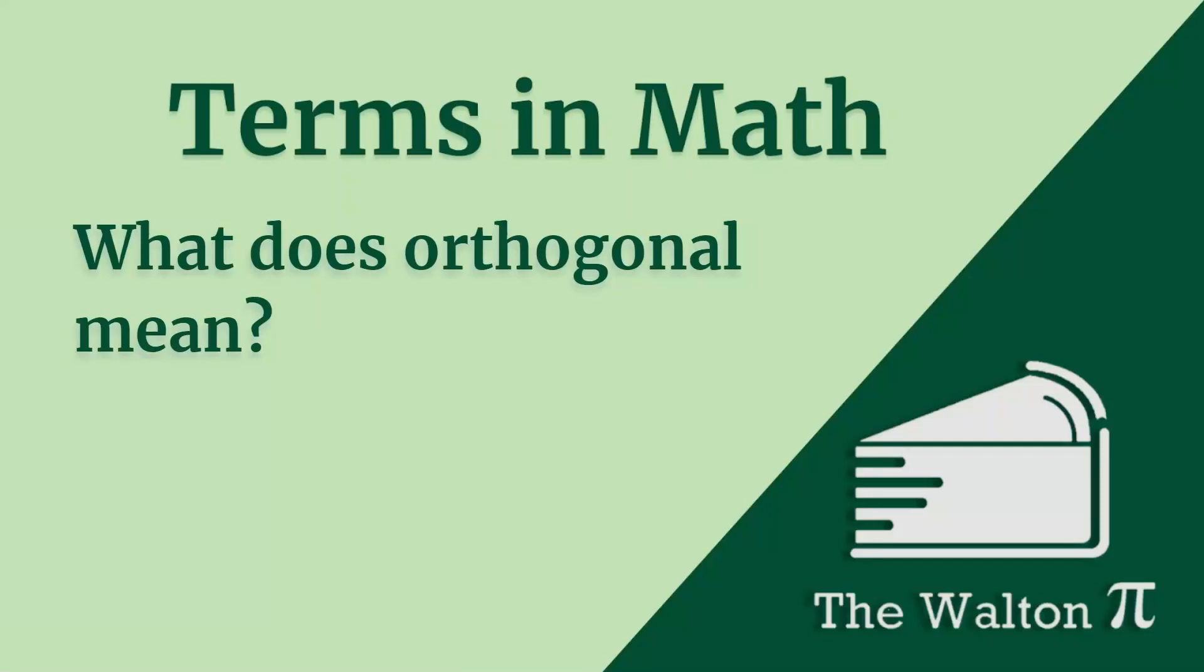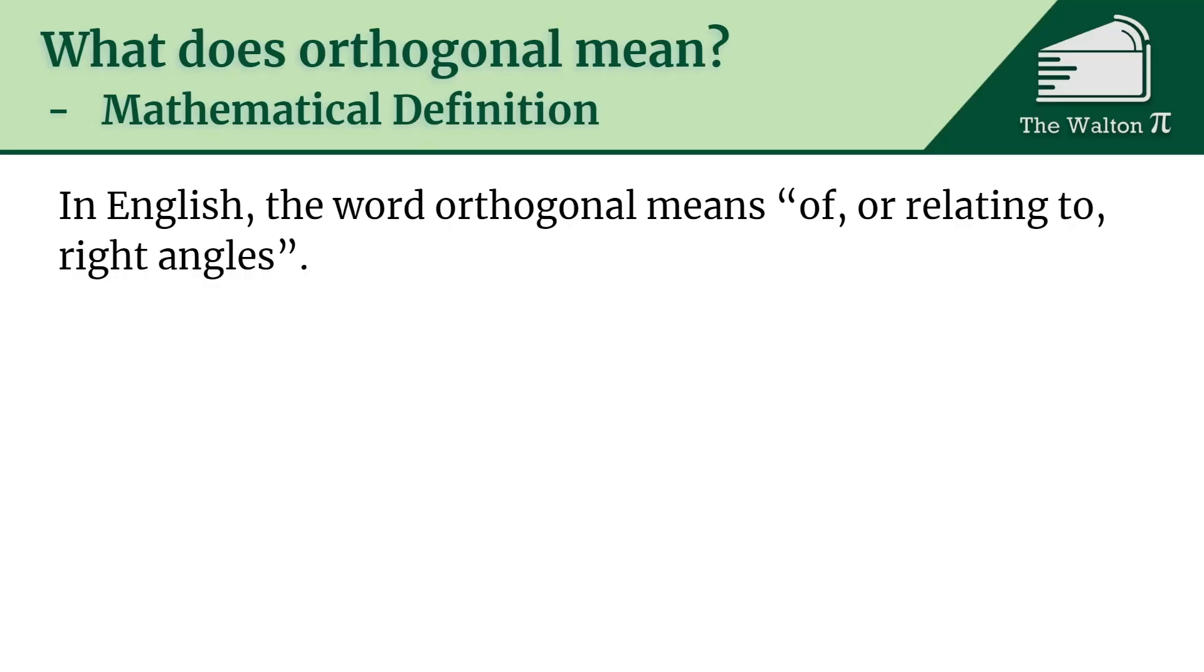Welcome to the Walton Pie. Today we're going to be discussing what it means for something to be orthogonal to another thing. In English, the word orthogonal means of or relating to right angles.